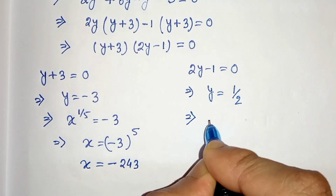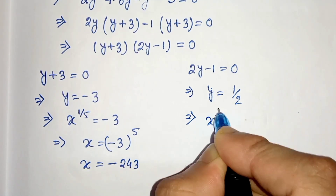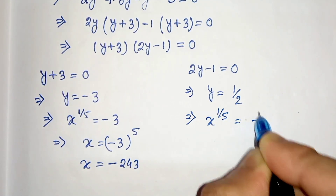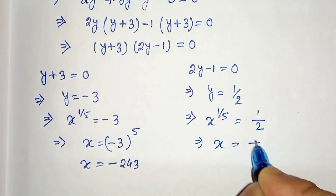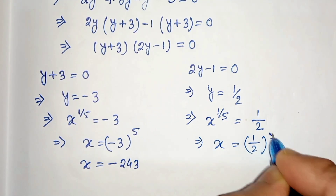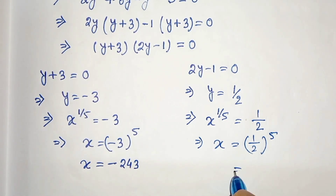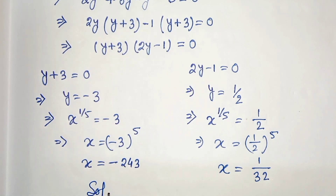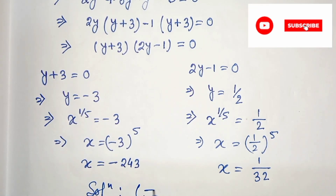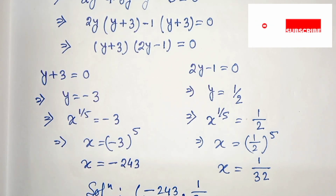From the other factor we get y equals to 1 by 2. Now let's replace the value of y: x to the power 1 by 5 equals to 1 by 2. We can write x equals to 1 by 2 to the power 5, which is 1 by 32. So x is 1 by 32. Our solution set is minus 243 and 1 by 32.